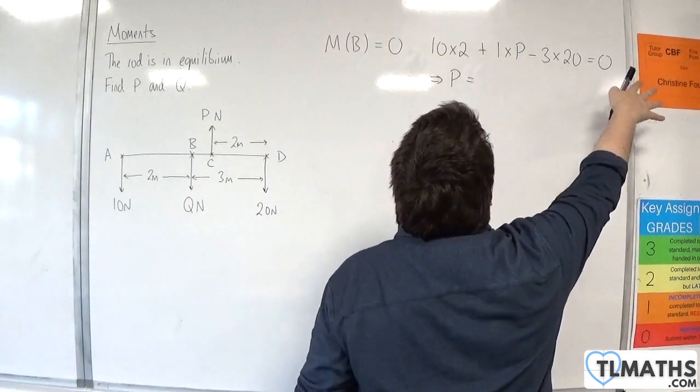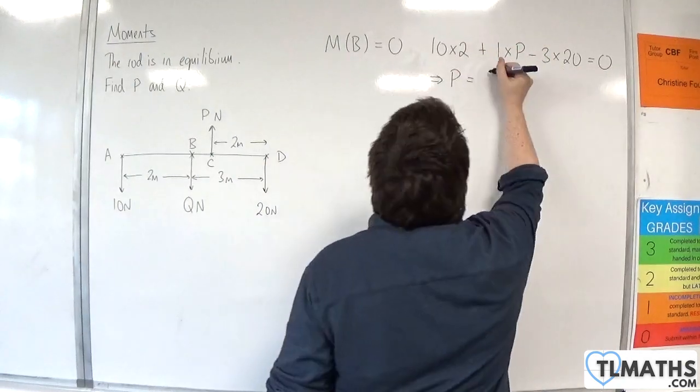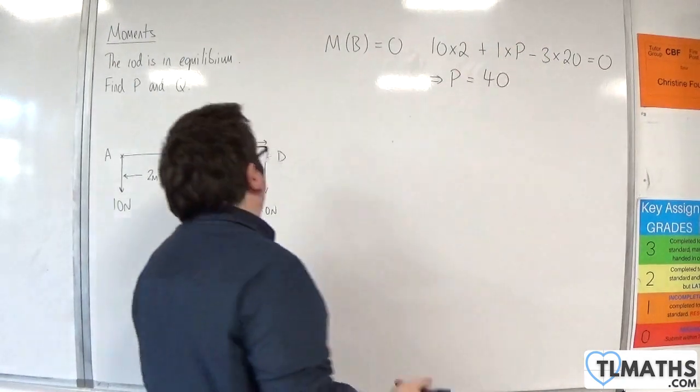Okay, so 3 times 20 is 60 and then we're going to take away 20, so P must be 40. So that's P.